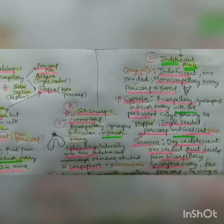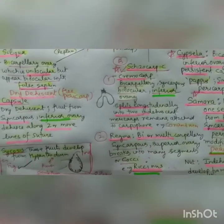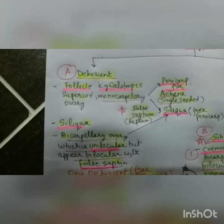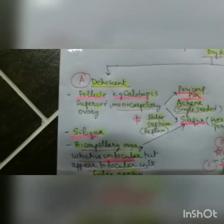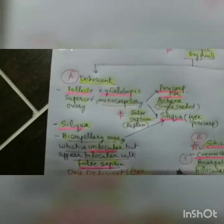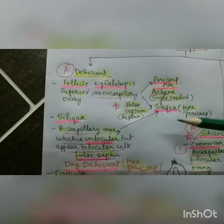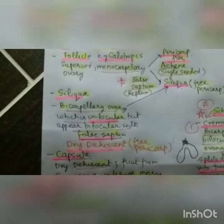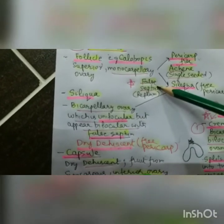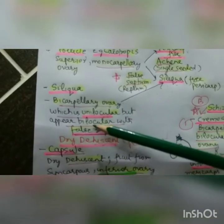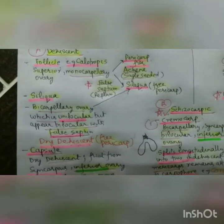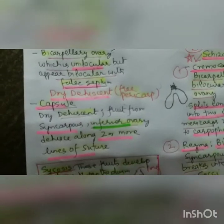So these are the indehiscent fruits. If it comes from a monocarpellary ovary it is caryopsis, and if from a bicarpellary inferior ovary it is cypsela. Then we have dehiscent fruits - follicle comes from a superior monolocular ovary but pericarp is free. Achene is also single-seeded. Siliqua is also a dehiscent fruit but comes from a bicarpellary ovary; because of the formation of a false septum or replum, it appears bilocular, and the pericarp is free.